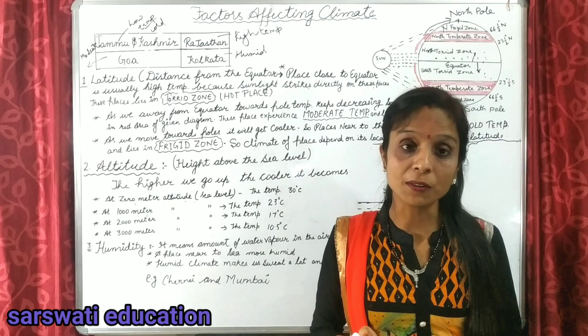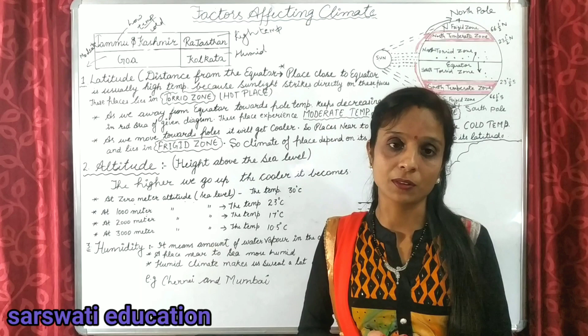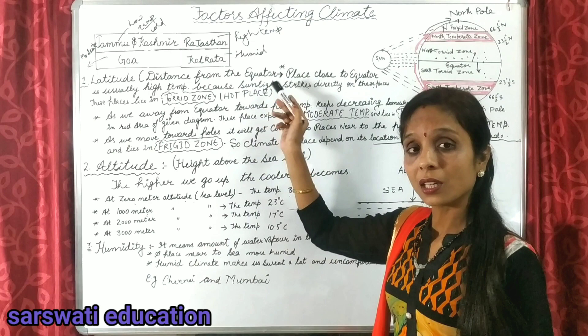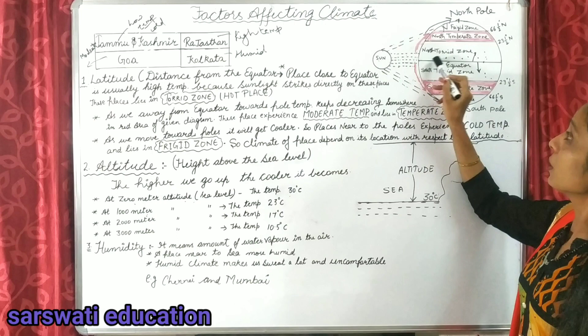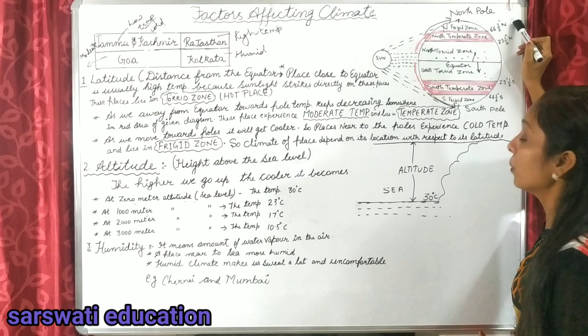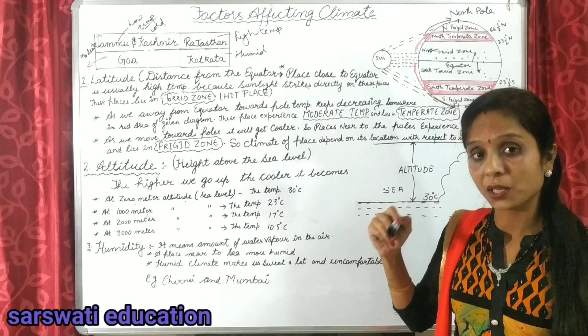Why do these areas have different climates and different temperatures? What is the reason behind it? In today's class we will discuss why different states of a country or different parts of the world have different climates. Our first factor is latitude. Latitude means distance from the equator. This is the equator, and these are latitudes — 23.5 degrees north and 66.5 degrees north — these are the distances from the equator.